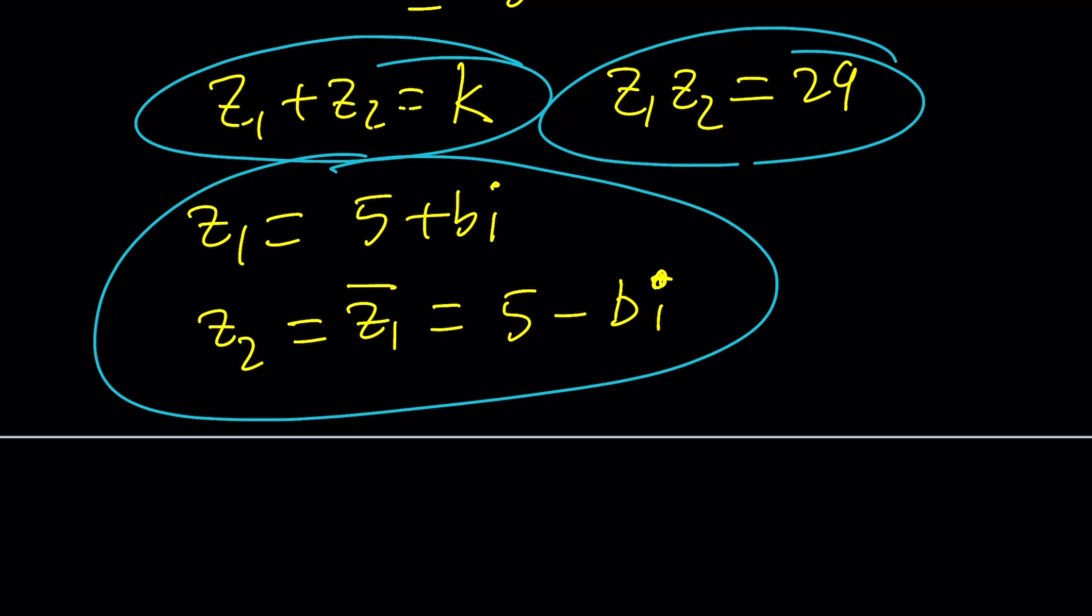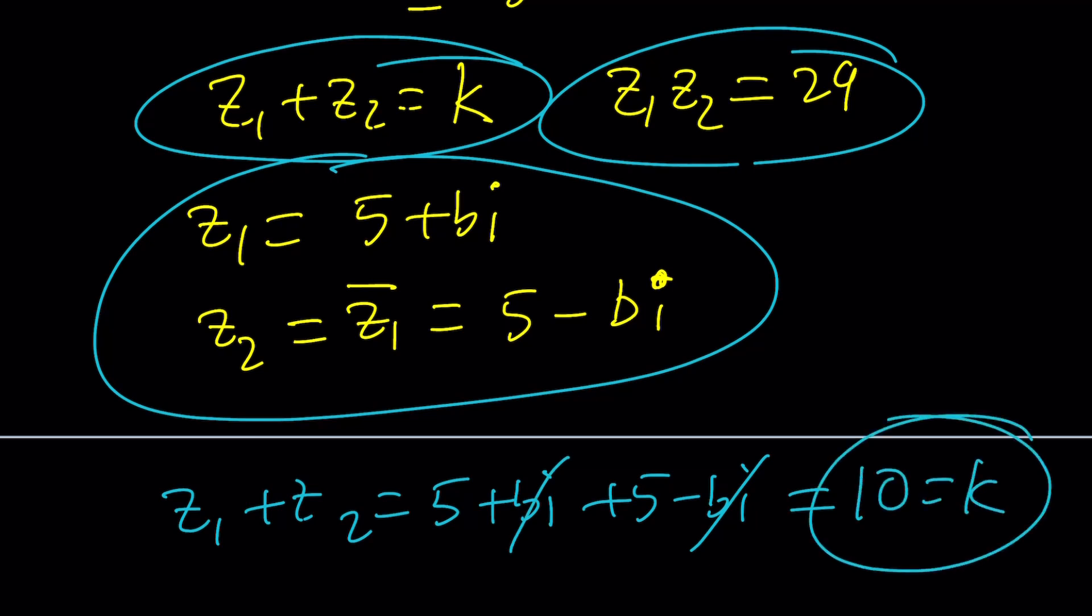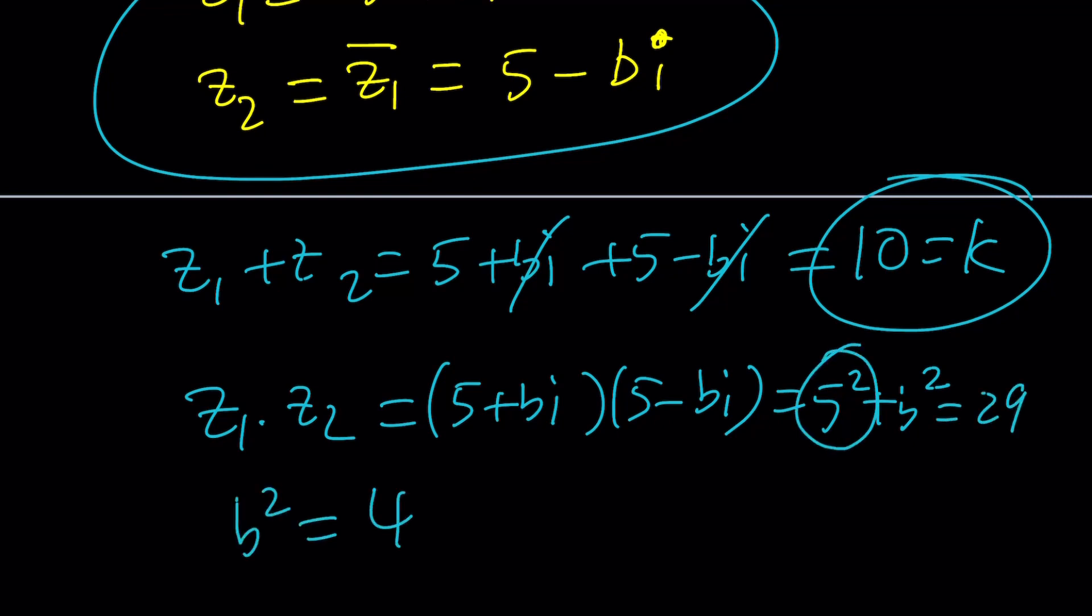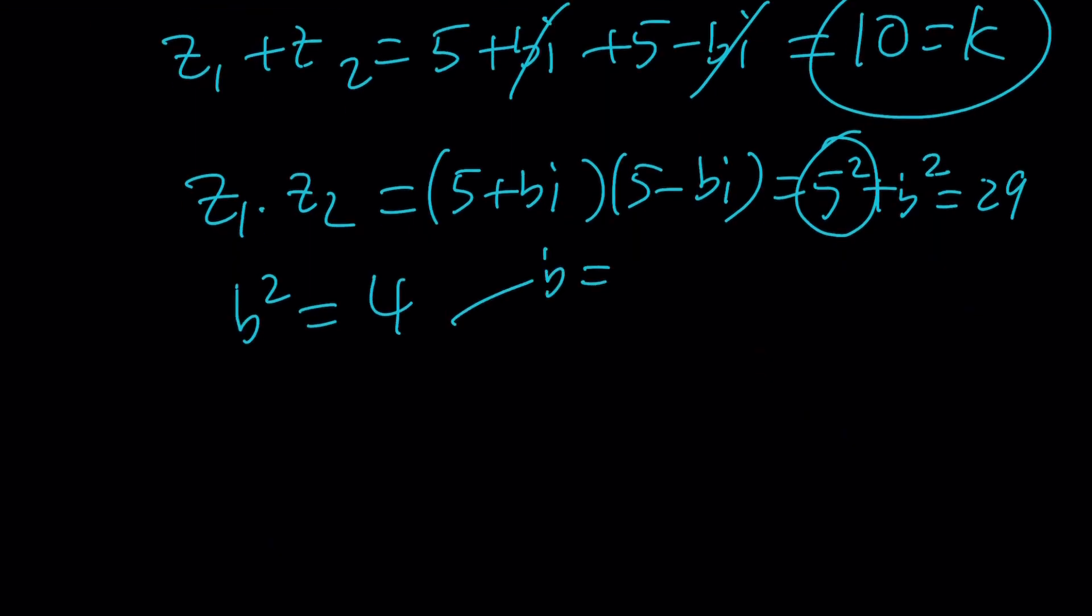We do know z sub 1 and z sub 2. So, let's go ahead and add them. 5 plus bi plus 5 minus bi is equal to 10. So, that's equal to k. Great. k is equal to 10. What about the product, z sub 1 and z sub 2? Their product is supposed to be 5 plus bi times 5 minus bi. And as you know, this product is a real number. It's the sum of two squares. When multiplied gives us a squared plus b squared. So, 5 squared plus b squared. But that's equal to 29. And from here, we get b squared equals 4 because 5 squared is 25. And that gives us b equals 2 or b equals negative 2 as before.